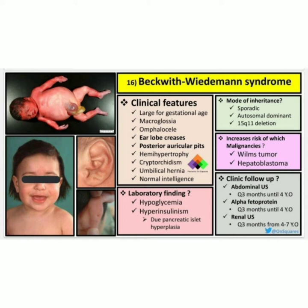The clinical features of Beckwith-Wiedemann Syndrome include: large for gestational age, macroglossia, omphalocele, ear lobe creases, posterior auricular pits, hemihypertrophy, cryptorchidism, umbilical hernia, and normal intelligence. Looking at the image, we can see all these features — the patient is large for gestational age, with macroglossia, omphalocele midline defect, ear lobe creases, posterior auricular pits, and hemihypertrophy.